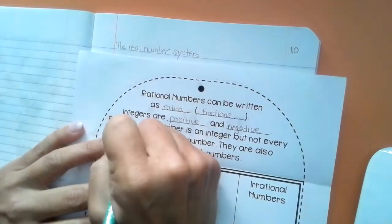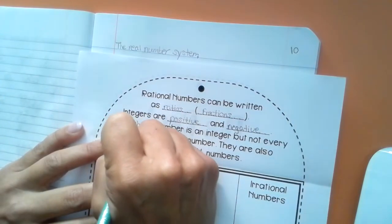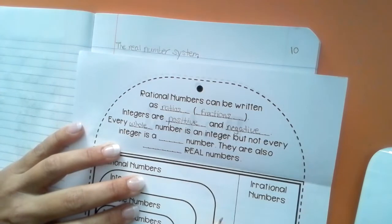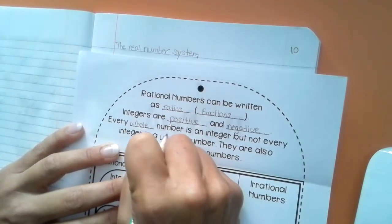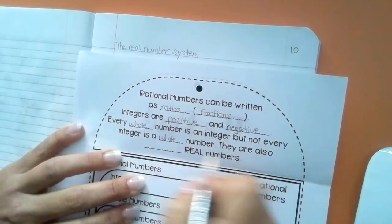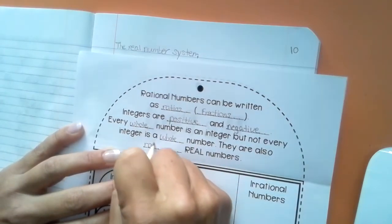Every whole number is an integer, but not every integer is a whole number. They are also rational, real numbers.